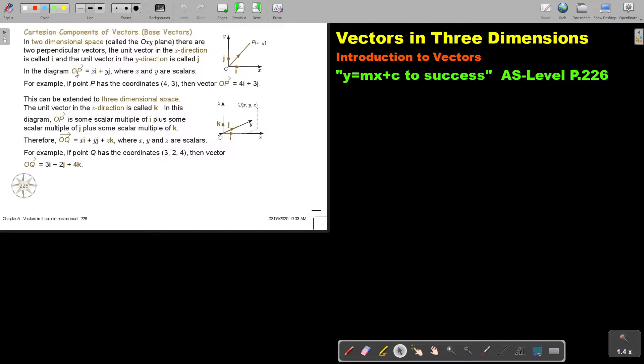In the diagram OP, XI and YJ, where X and Y are scalars. For example, if point P has coordinate 4, 3, then the vector OP is 4I plus 3J.